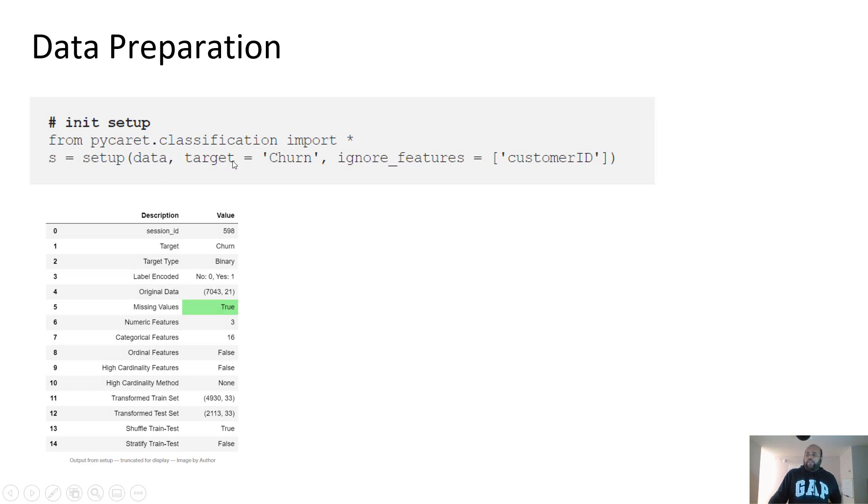To prepare the data in PyCaret, you basically import the module. So this is the code you would write in Jupyter notebook or any of your IDE or whatever you are using for Python. You import the classification module, pass the data. This is the data frame called data. Pass the target column. Churn is the name of the target column. And then I'm ignoring customer ID features because I don't want to train models on customer IDs. It's a unique identifier. And you can see we have 7,000 data points. It was divided into two sets, train and test, 5,000 and 2,000. This is how you actually evaluate the performance of your machine learning models.